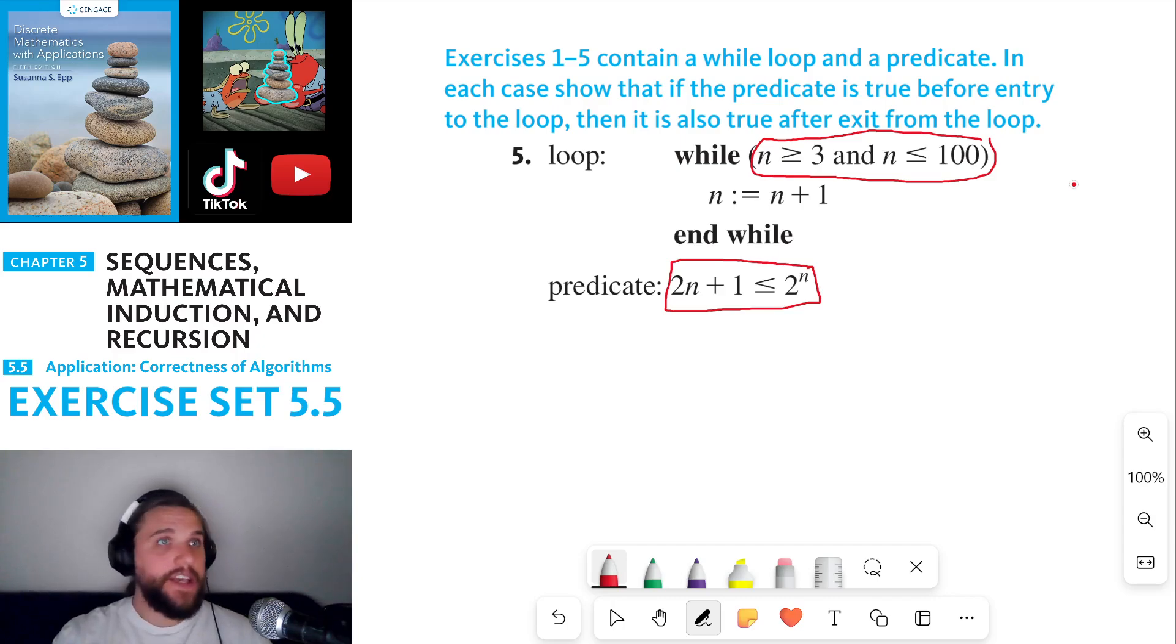Now, n is going to be some number between 3 and 100. Each time we iterate through this while loop, n is going to increment by one unit each time. So if n starts at 4, then n is going to increase to 5, and then n is going to increase to 6, and n is going to continue to increment until the condition of this while loop is no longer satisfied.